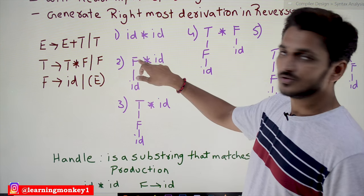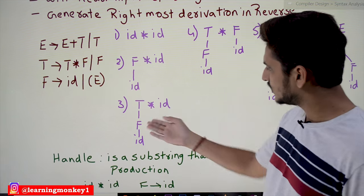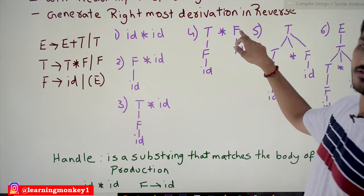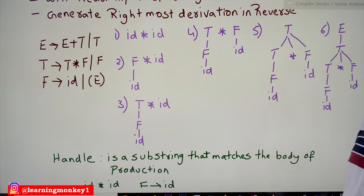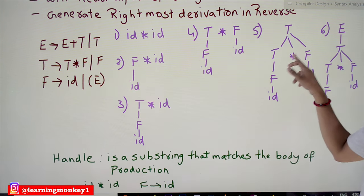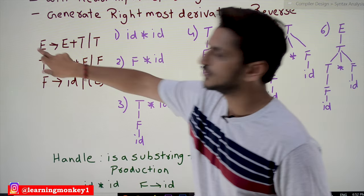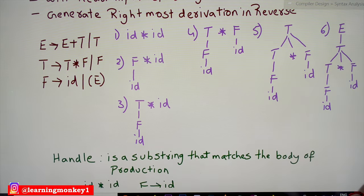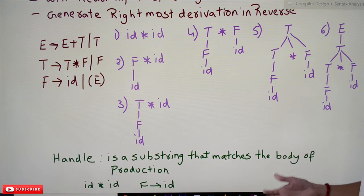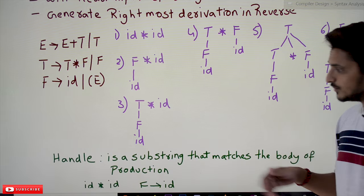So id is reduced to F, giving us 'F star id'. Next, F can be reduced to T using T → F, giving 'T star id'. Then this second id is reduced to F, giving 'T star F'. T star F can be reduced to T using T → T star F. Finally, this T is reduced to E. This is how bottom-up parsing generates the rightmost derivation in reverse — we are reducing terms, whereas in top-down parsing we were expanding them.